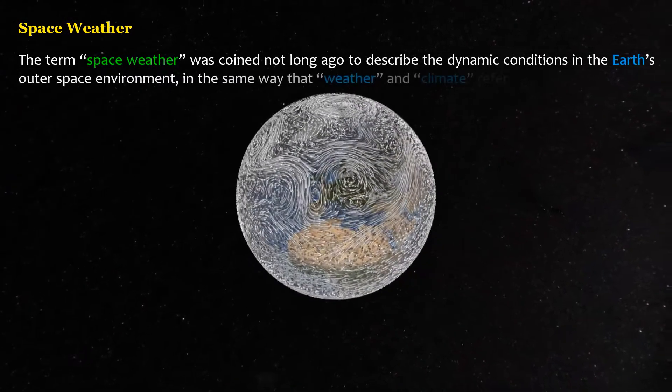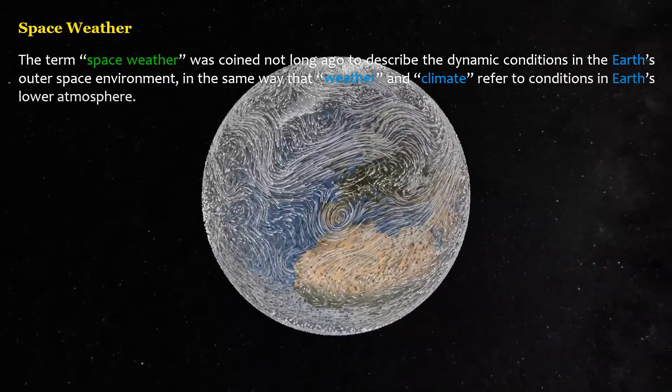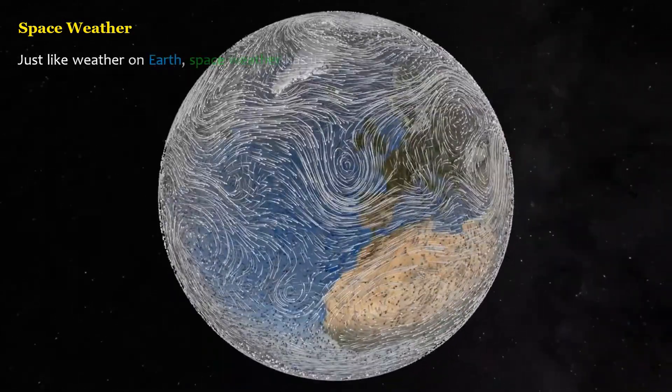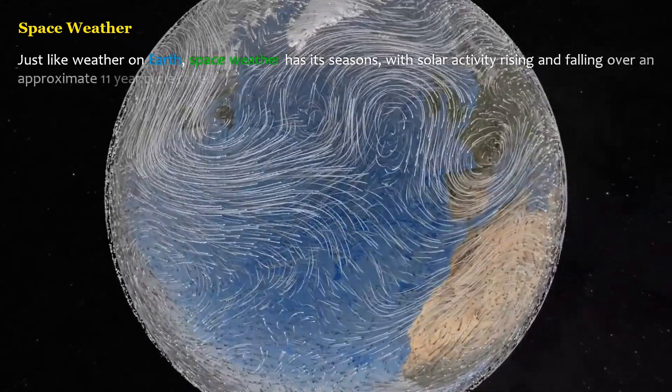In the same way that weather and climate refer to conditions in Earth's lower atmosphere, just like weather on Earth, space weather has its seasons, with solar activity rising and falling over an approximate 11-year cycle called solar cycle.